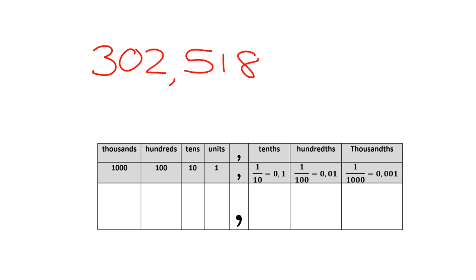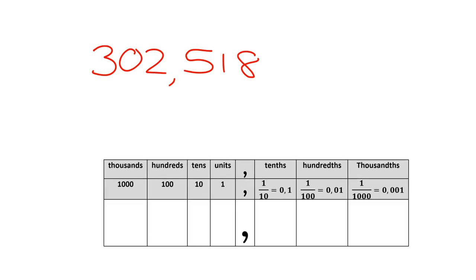So if we have a number like this one I've just written, 302,518, what does that all mean? Well the 302 part of it is what we've been very familiar with in our place value that is just to the left of the comma. But the comma 518, well that comes to the right of the comma and what does it all mean?